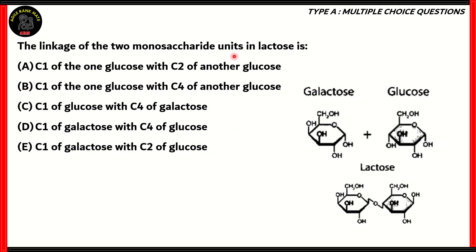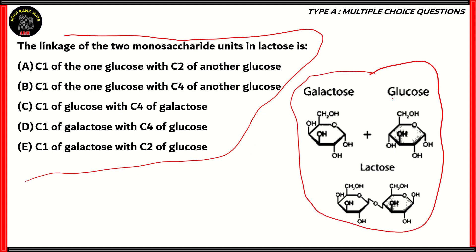The linkage of the two monosaccharide units in lactose is: C1 of the one glucose with C2 of another glucose, C1 of one glucose with C4 of another glucose, C1 of glucose with C4 of galactose, C1 of galactose with C4 of glucose, or C1 of galactose with C2 of glucose. So this here is the question. Now for those of you who don't know how lactose is formed, this is an image to help you out with that. Lactose is basically a disaccharide formed by galactose and glucose. So therefore, options A and B turn out to be incorrect.